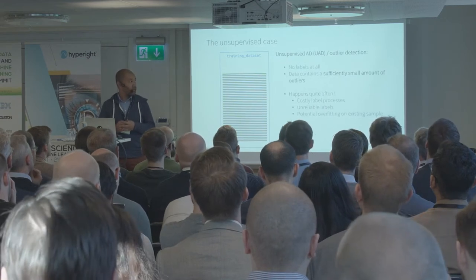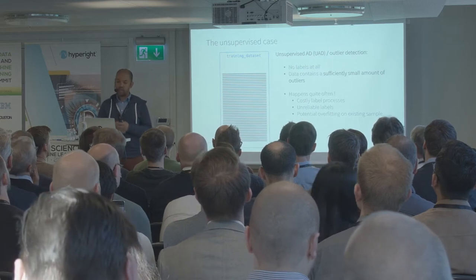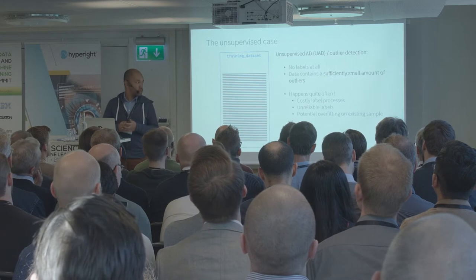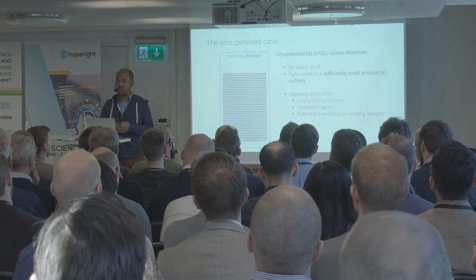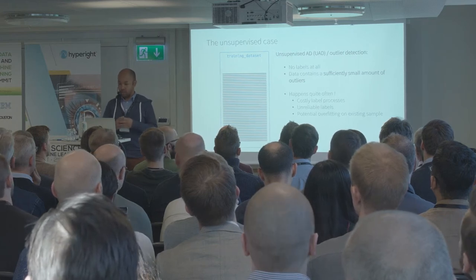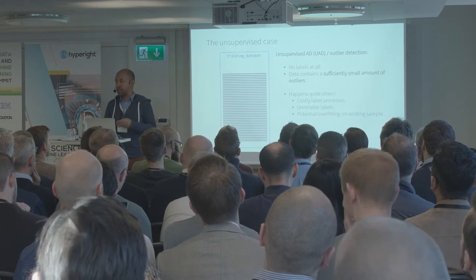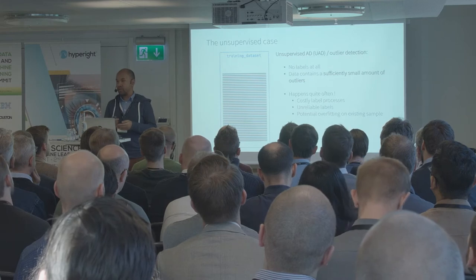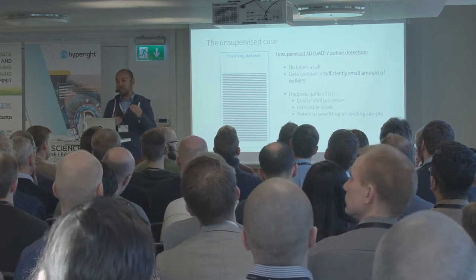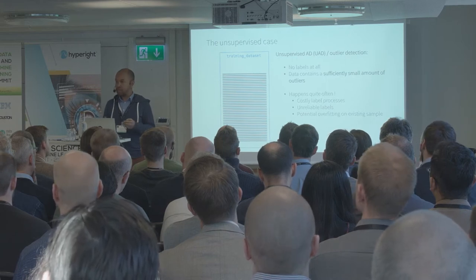For the worst case scenario, you have a training dataset that has no label at all. Here we are in the fully unsupervised case, and we will make the assumption that our data potentially contains a sufficiently small amount of outliers. This worst case scenario happens quite often. For example, if you want to label all your warranty fraud claims, that may take you time and cost you a lot of money. You can also have unreliable labels from sensors in predictive maintenance. And finally, you can have the possibility of overfitting if you only have a few portions of labeled data — you may not want to assume those outliers are all the possible ones, because first you want to be able to generalize.